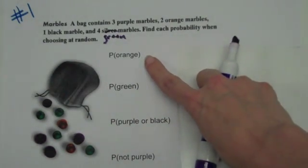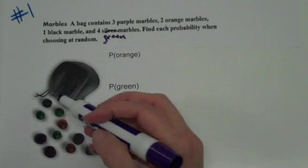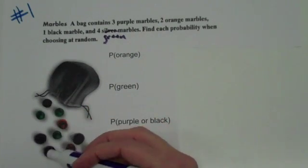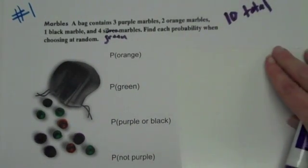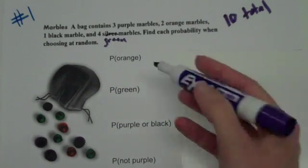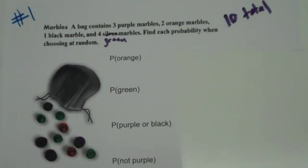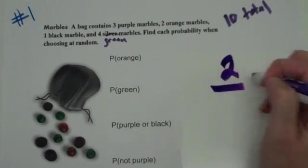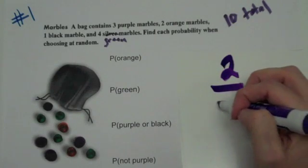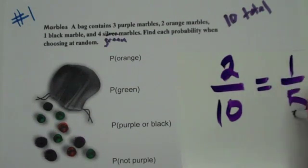So what we want to do for this first one is find the probability of orange. Remember, you always want to know your total possible outcomes — how many marbles are in the bag? We have ten total. That's very important. So the probability of getting an orange is going to be your total number of favorable outcomes over your total outcomes. There are two orange marbles and ten total, so the probability when you reduce it will be one out of five. You have a one out of five chance of getting an orange marble.